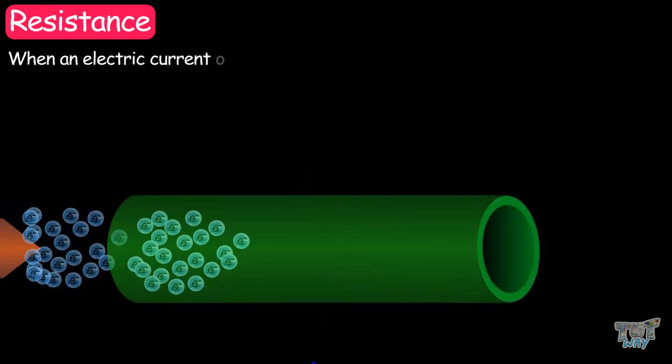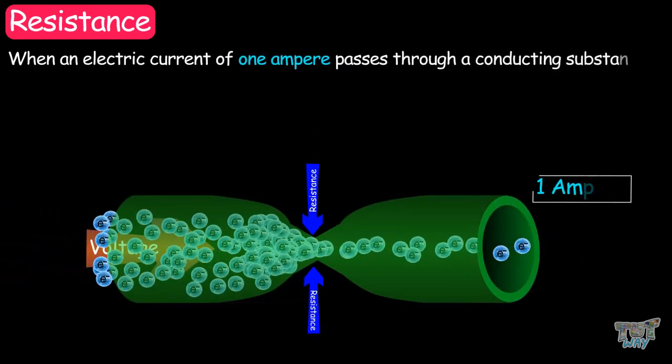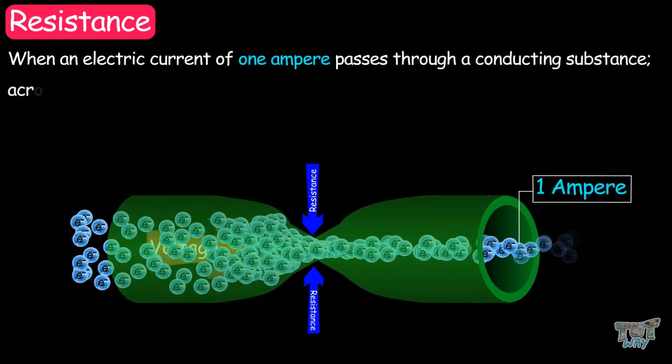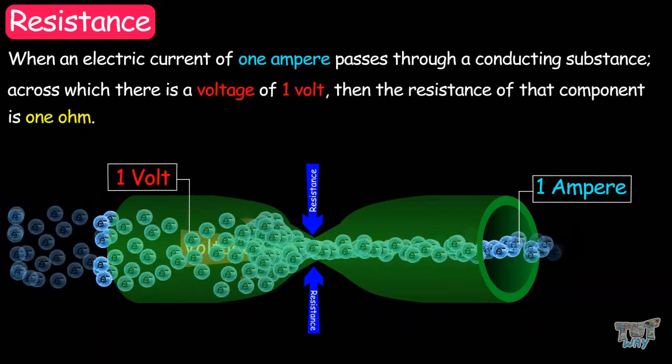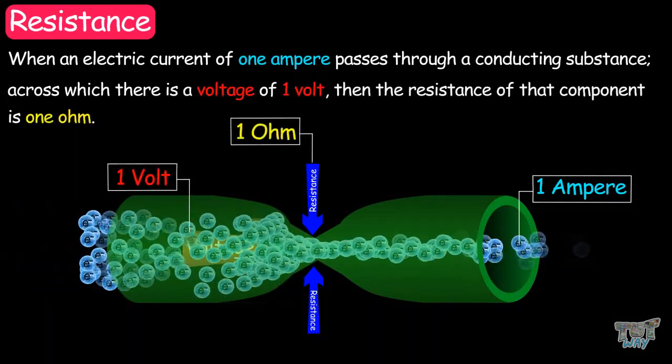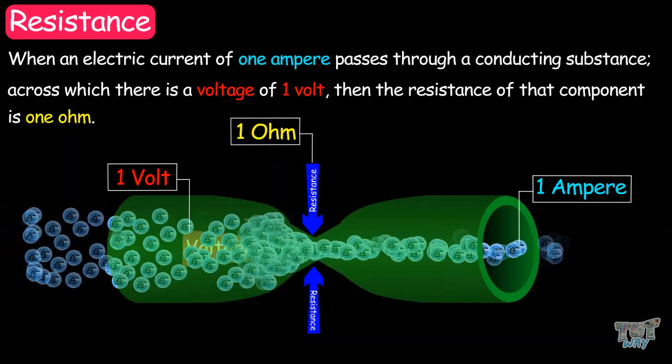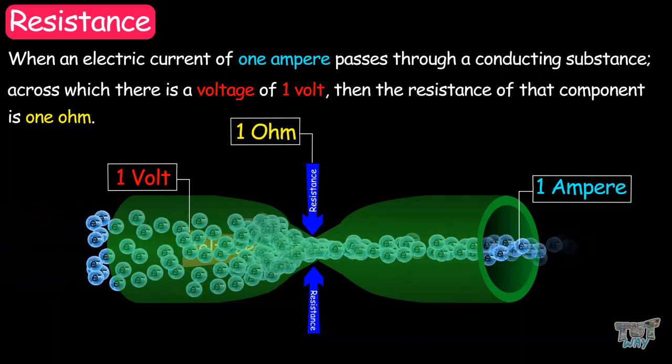When an electric current of one ampere passes through a conducting substance, across which there is a voltage of one volt, then the resistance of that component is one ohm. This resistance of one ohm tries to stop the flow of electric current.